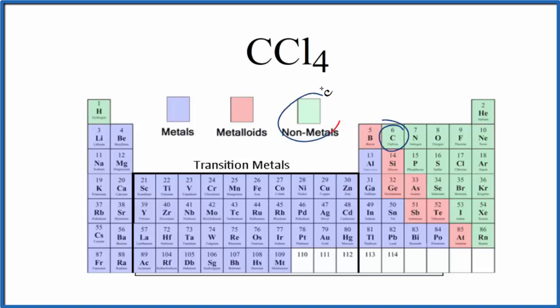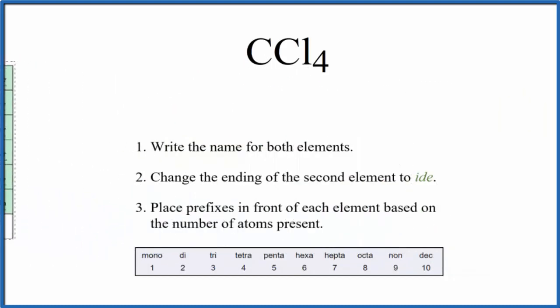Carbon is a nonmetal, and chlorine right here, that's also a nonmetal. So when we have nonmetals bonded together, this is a molecular or covalent compound.